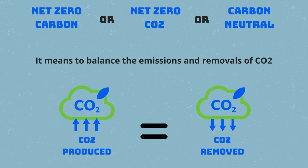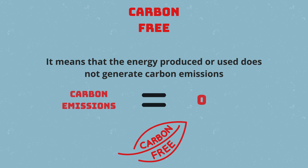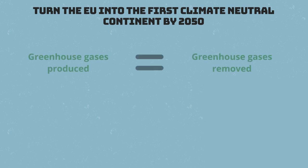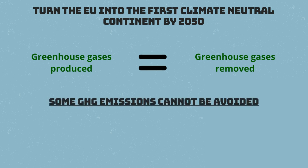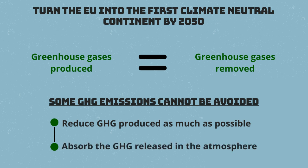The focus for carbon neutrality is just on CO2 emissions, but the logic is the same: to equal the CO2 produced and removed through protection measures. Carbon free means that the energy produced or used does not generate carbon emissions — the carbon emissions are reduced to zero along the entire supply chain. The EU's goal of climate neutrality means it will compensate the greenhouse gases emitted with those removed, all by 2050. This approach stems from the fact that some GHG emissions cannot be avoided without completely shutting down certain industries, such as commercial flights.